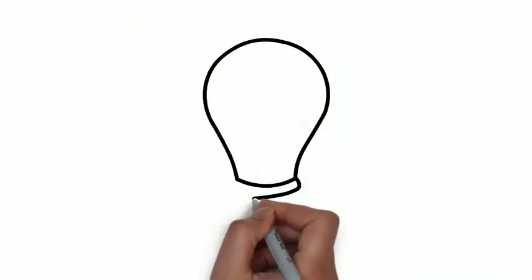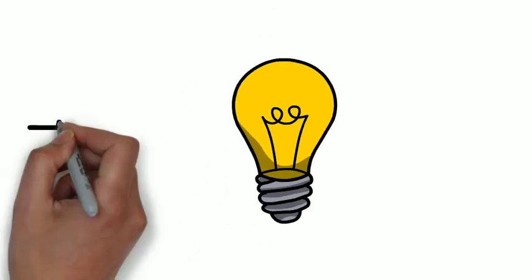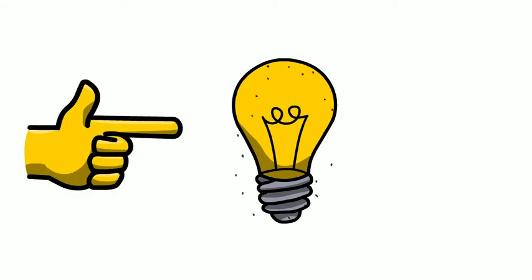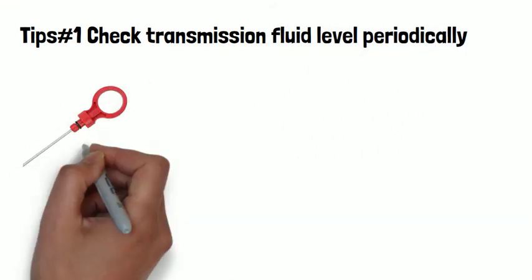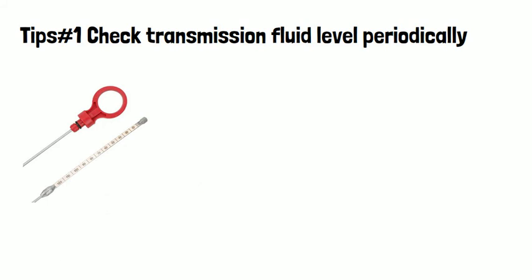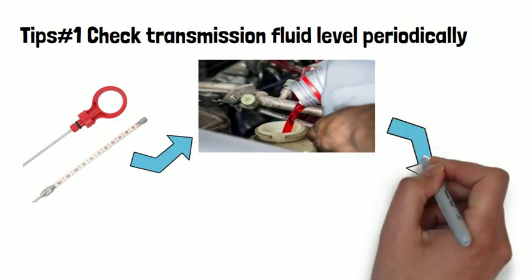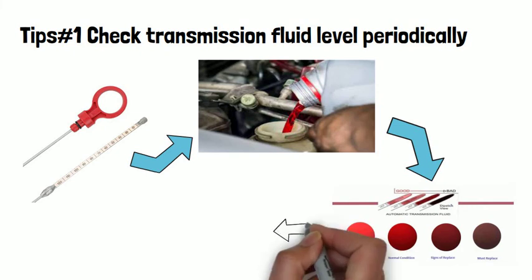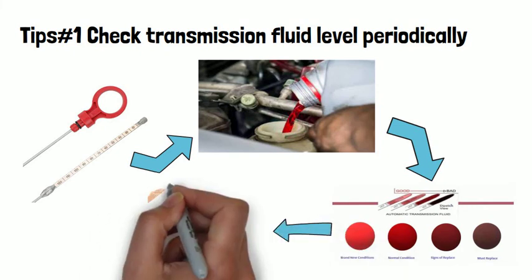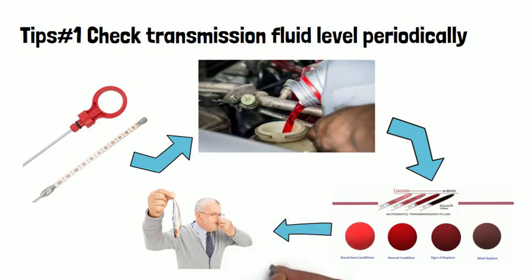Now for the handy tips to take care of your automatic transmission. Tip number one: check the transmission fluid level periodically. Use the dipstick — wipe it clean and insert it to check the transmission oil. The fluid should be a bright red color. If you see a dark color or it smells like rotting fish, it's time to have your mechanic replace the oil.